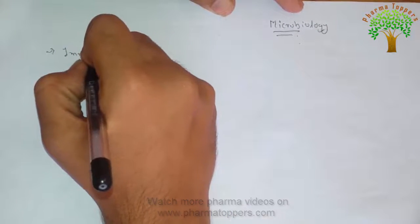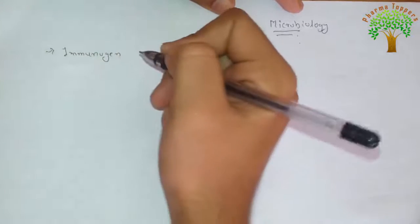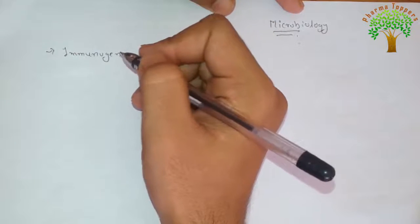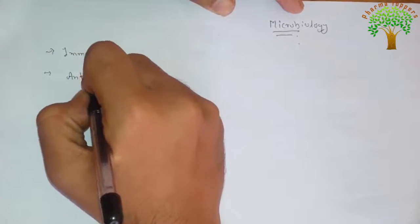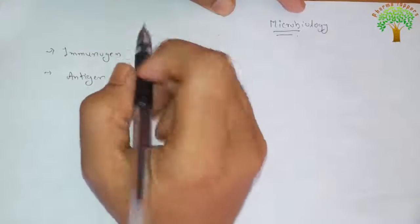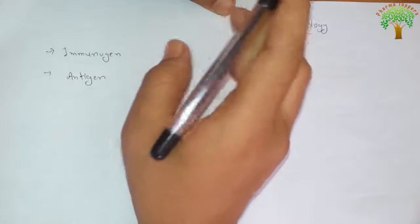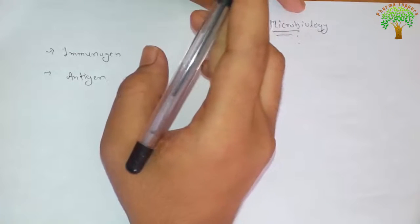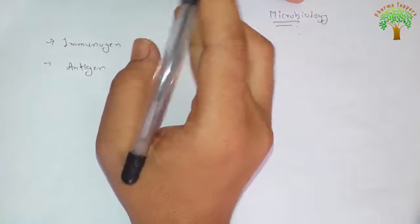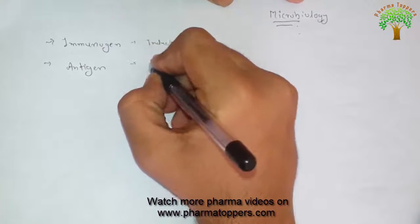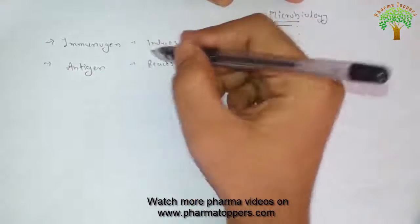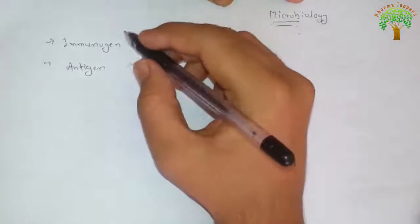First is Immunogen. Immunogen is a substance that induces the specific immune response. The difference between Immunogen and Antigen is that Immunogen induces the specific immune response, while Antigen is a substance which reacts with the products of the specific immune response.